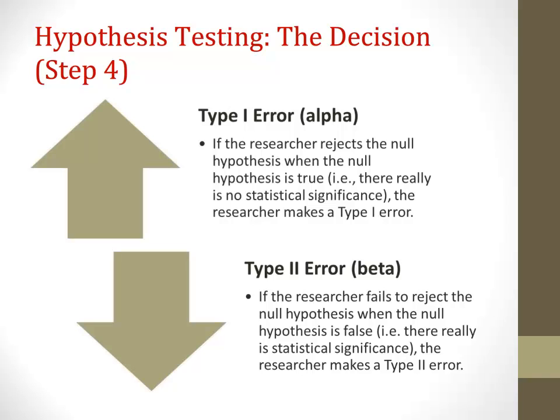Again, a type 1 error is when a researcher rejects the null hypothesis when it's actually true — they find statistical significance when there really wasn't any. A type 1 error is often called alpha.